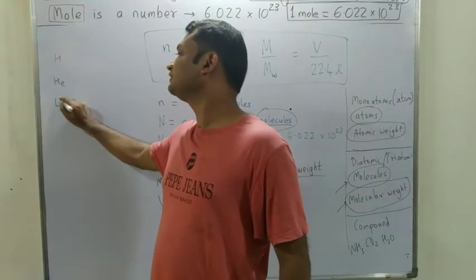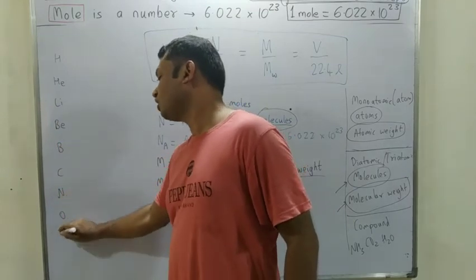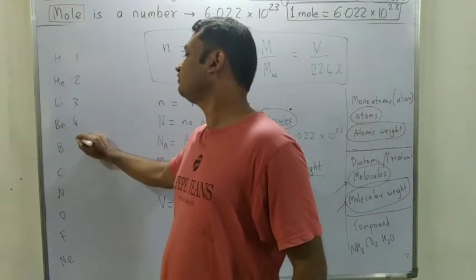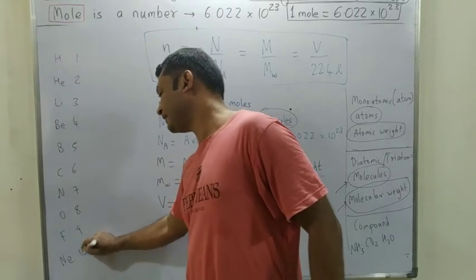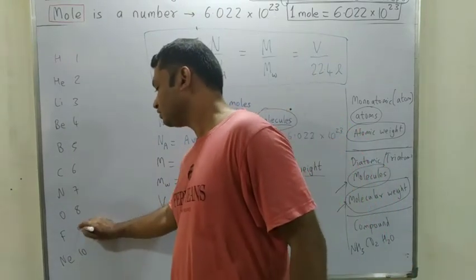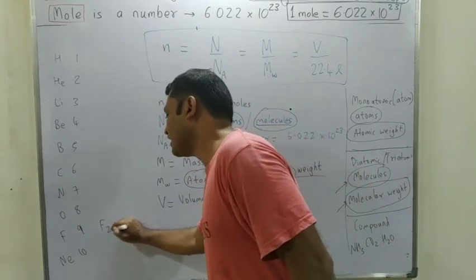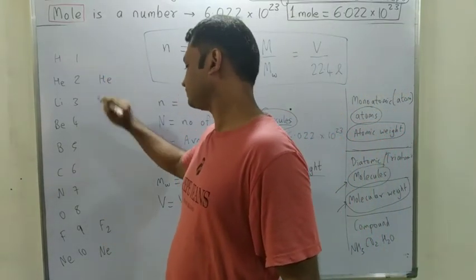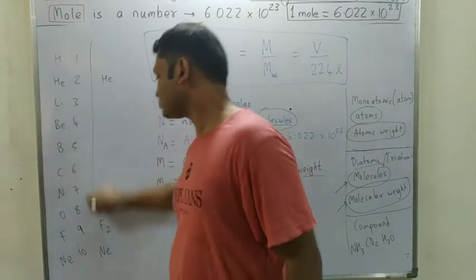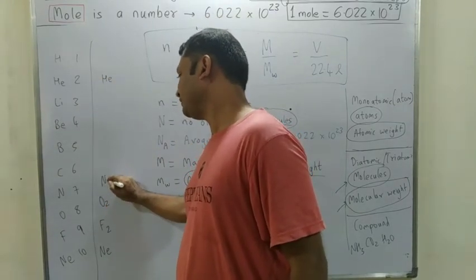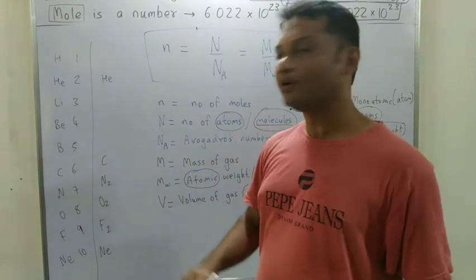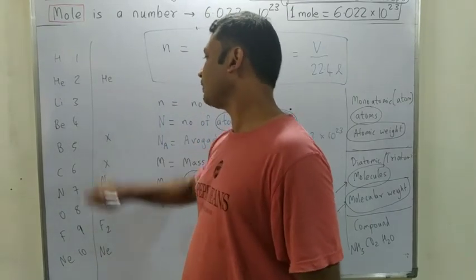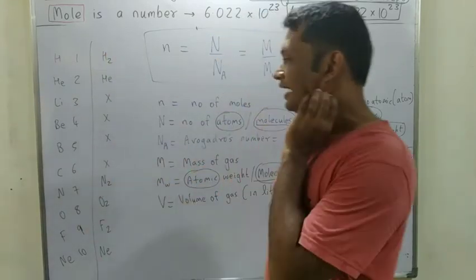Hydrogen, Helium, Lithium, Beryllium, Boron, Carbon, Nitrogen, Oxygen, Fluorine, Neon — so these are the first 10 atoms. Fluorine is diatomic form. Neon is a noble gas — single. Helium is also noble gas — single. Oxygen is O2, Nitrogen is N2. Carbon depends on the compound form. Hydrogen is diatomic. The elements I circled are all diatomic.